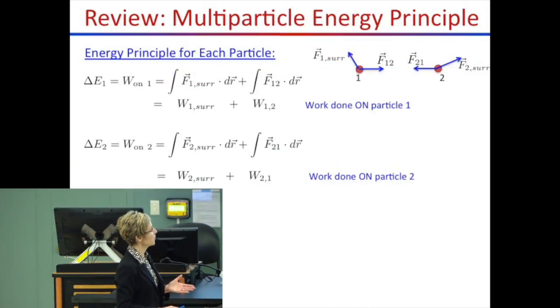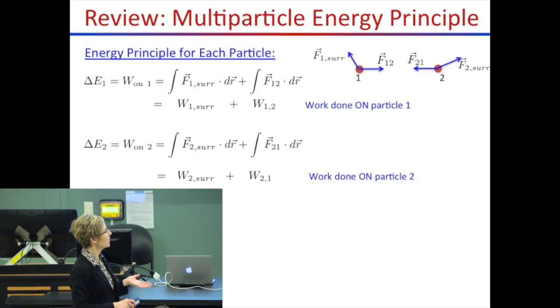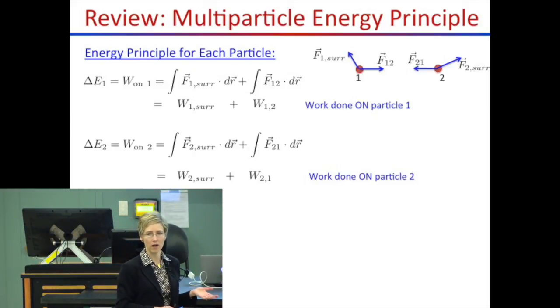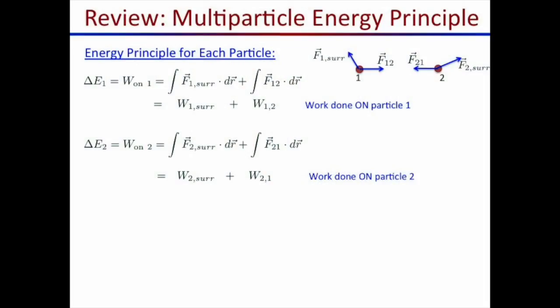Now I'm going to write down the exact same thing for particle 2. The change in energy on particle 2 is due to work done on particle 2 — part done by the surroundings, plus the work done on particle 2 by particle 1. Then I add it all together to get the total energy principle. The total change in energy of the two-particle system is the total work done by the surroundings plus the total work done internally.